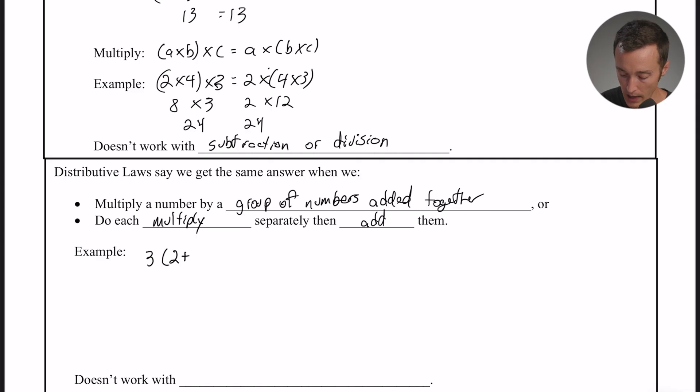So essentially what they're saying is if we were to multiply 3 times the quantity (2 + 4), we would get the same thing if we did all the multiplications separately and then just added together our answers. A lot of times in a math class you'll see this written with little arrows, these little distributive property arrows. Essentially it's saying that if you have a number times a quantity, you can do the individual multiplications and just add them together.